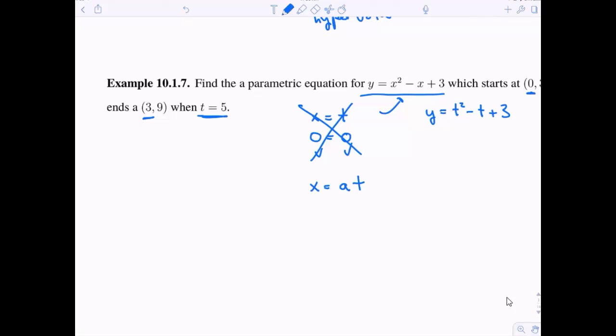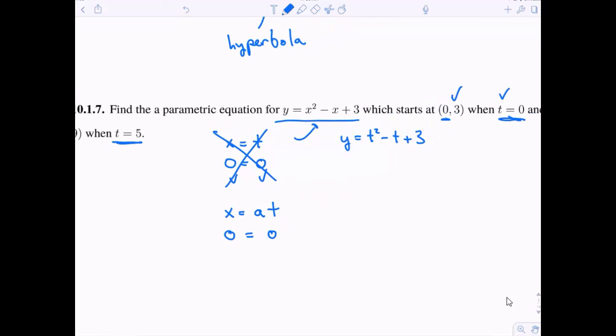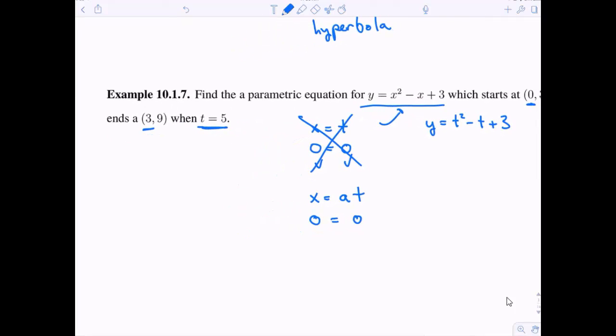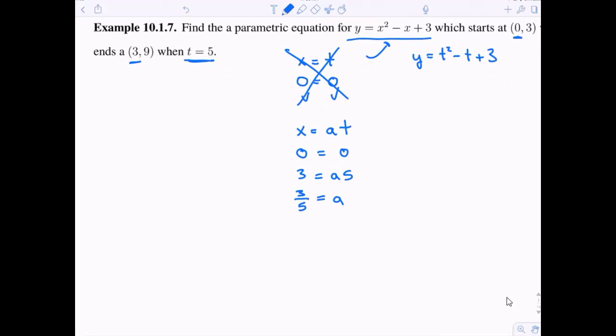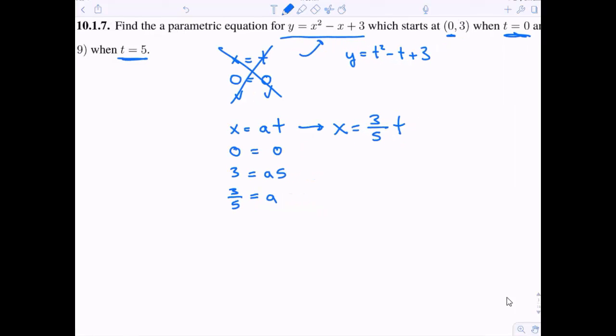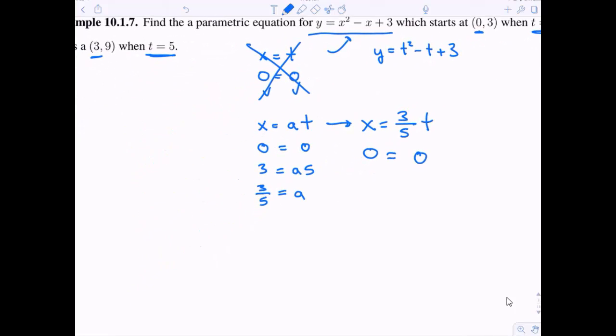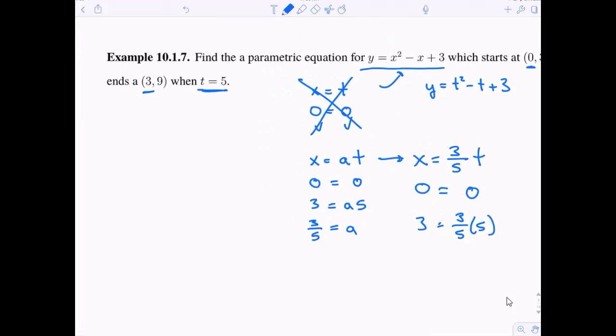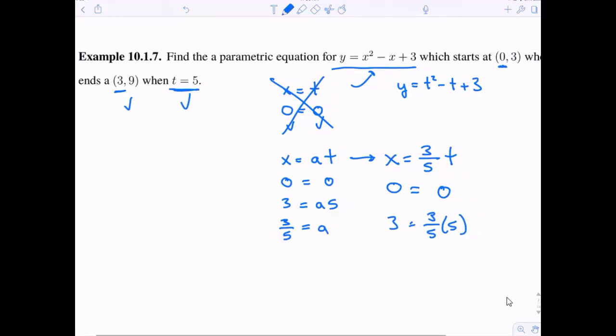I'm going to try to make x be some scalar multiple of t. When I plug in 0 for t, I'll still get 0 for x, which is great. But I want to choose this value of a so that when I plug in 5 for t, I get 3 for x. I can solve for a and get a should be 3 fifths. So what if I parametrize x by 3 fifths t? When I plug in 0 for t, I still get 0 for x. So it satisfies this first condition. The second condition, when I plug in 5, I should get 3 for x. When I plug in 5 for t, I indeed get 3 for x.